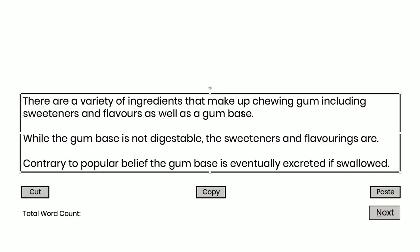This is where it gets a little bit tricky, and on test day you're probably going to write it, delete it, try again, delete it, try again. My suggestion is on test day you use your noteboard booklet and write down those three parts, then type it into the screen. You're going to have to move certain clauses and phrases around until you're satisfied that you've written a nice coherent sentence that accurately summarizes the content. So let's do that. Now I need to combine all of these: there are a variety of ingredients that make up chewing gum, including sweeteners and flavors as well as a gum base; while the gum base is not digestible, the sweeteners and flavorings are; contrary to popular belief, the gum base is eventually excreted if swallowed.